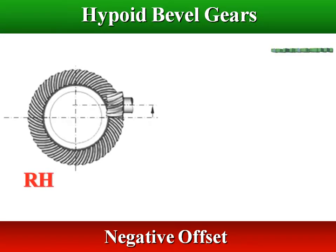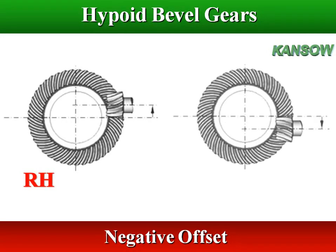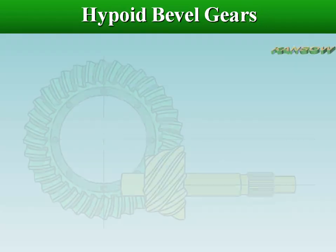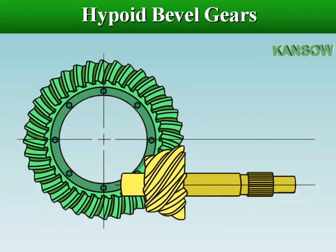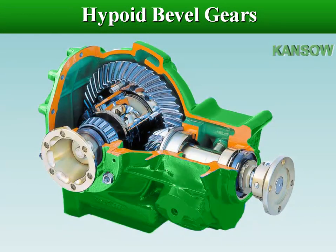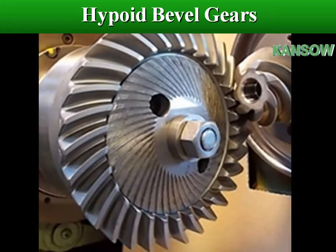In general, hypoid gears are most desirable for those applications requiring large speed reduction ratios, non-intersecting shafts, and also great smoothness and quietness of operation.